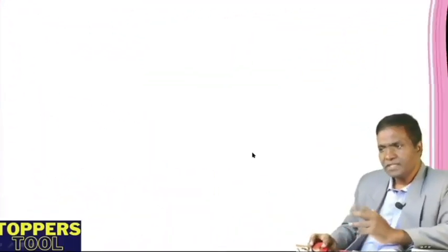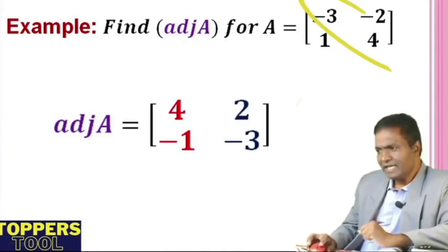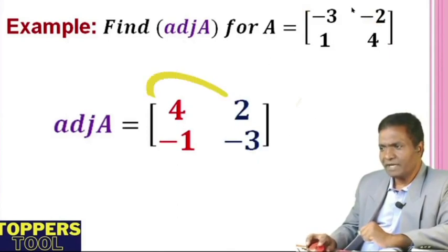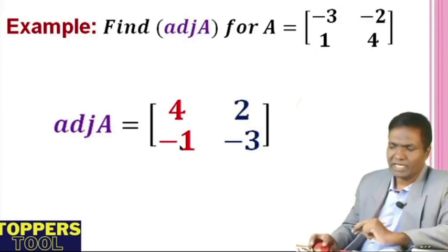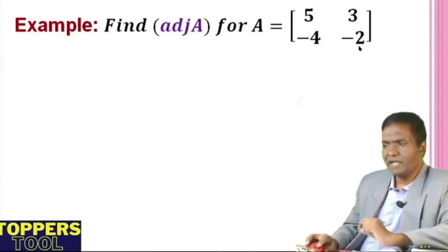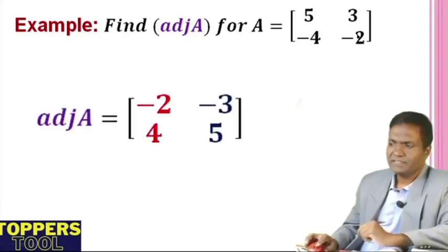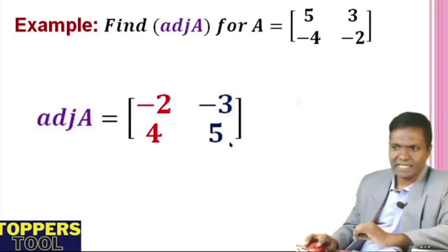Try it yourself to understand it better. Find the adjoint of A for A equals this matrix. See here another example: find the adjoint of A for A equals [5, 3; -4, -2]. Interchange the diagonal elements: minus 2 comes here; change sign of off-diagonal: plus 4 here, minus 3 here. So the adjoint is [-2, -3; 4, 5].